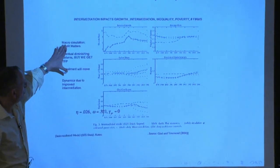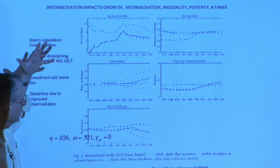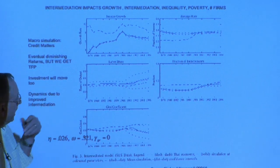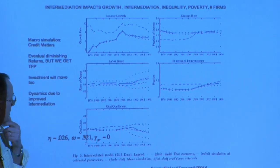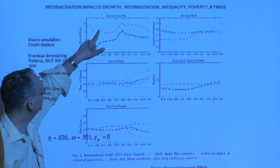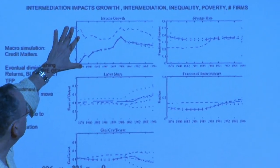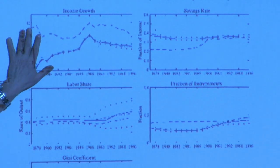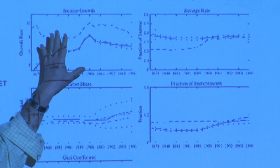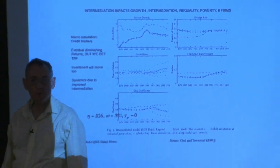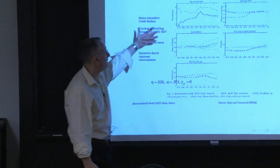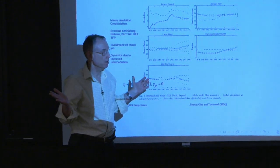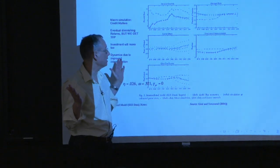Here are income, savings, labor share, the fraction of entrepreneurs, and a measure of inequality — the Gini — as both predicted by the model and what is actually in the data. Income growth in the model is always less than it is in the actual data. Remember the science principle of seeing how well a model does — we could match these things much better if we also chose the parameters to try to match them, but we didn't do that. We're completely under. It's amazing it's doing as well as it does at all.